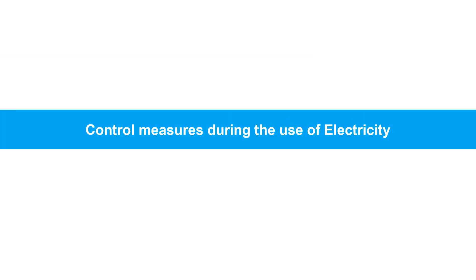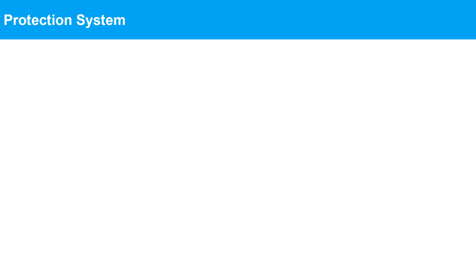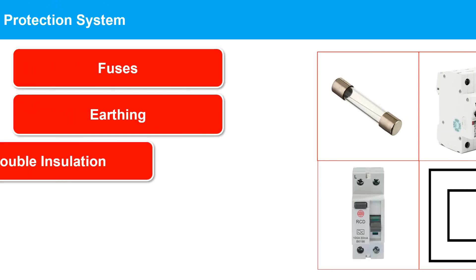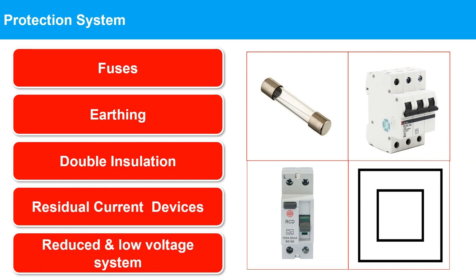Let us now understand control measures during the use of electricity. Electrical equipment must be carefully selected to ensure that it is suitable for the electrical system, purpose, and environment of use. Various protection systems can be used for electrical equipment, such as fuses, isolation of supply, double insulation, residual current devices, and reduced and low-voltage systems. Each of these protection systems has advantages and limitations.